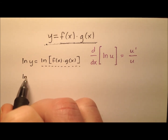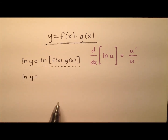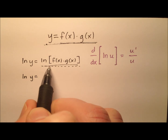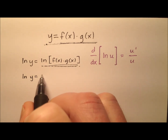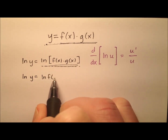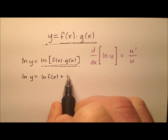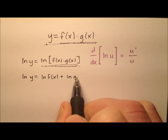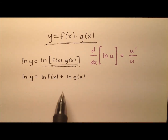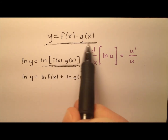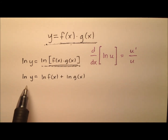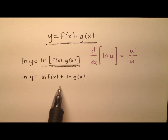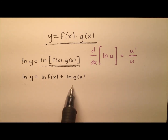So I'm going to have the natural log of y equals — using this log rule — the natural log of f of x plus the natural log of g of x. And now I've split it up so that instead of being a product, it's a sum.